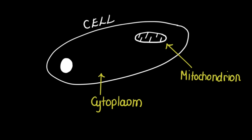The first stage of aerobic respiration is glycolysis, which takes place in the cytoplasm producing pyruvate. This stage is actually anaerobic, but to continue with aerobic respiration, the pyruvate produced from glycolysis enters the matrix of the mitochondrion through active transport.